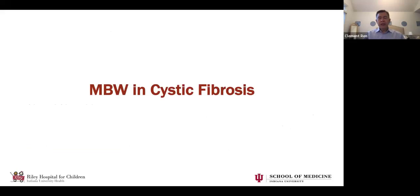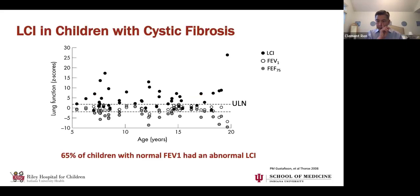Now let's talk about how MBW can be applied to pediatric respiratory disease — starting with CF, where most MBW data have been published. By the early 2000s, it was clear that MBW and LCI in children with CF is much more sensitive at identifying disease compared to spirometry. In a study by Per Gustafson, one of the pioneers of LCI measurements, he and colleagues measured LCI and spirometry in a cohort of children with cystic fibrosis ages 5 to 20.